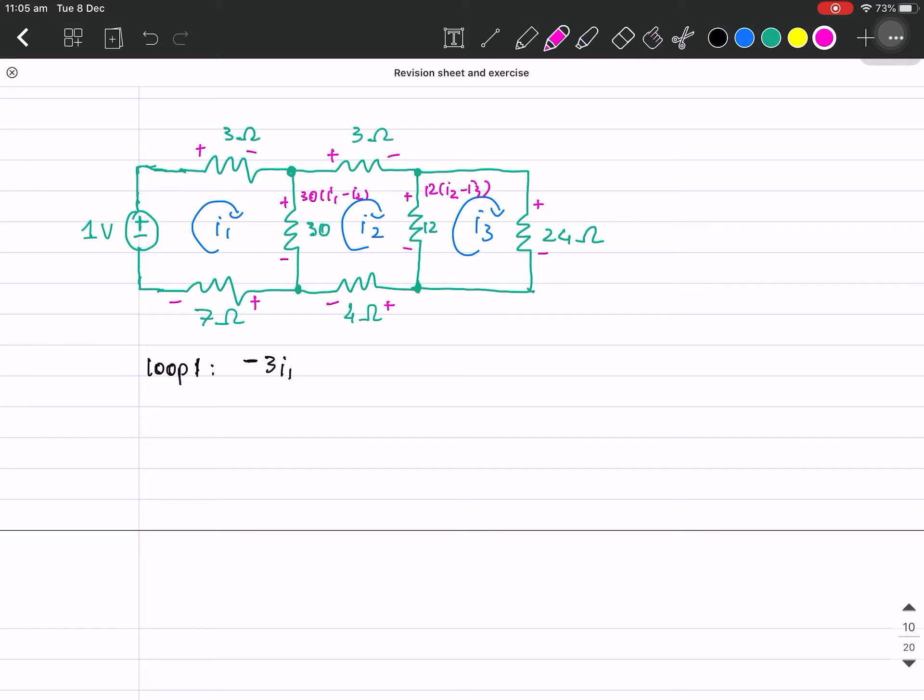The reason behind this is one current is flowing down and one current is flowing up. So we have negative 30(i1 - i2) subtract to 7 ohms, plus 1 is equal to 0. All right.